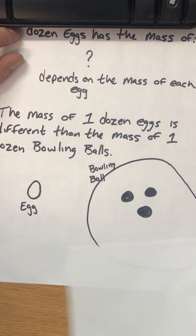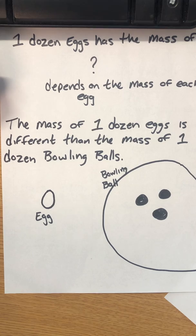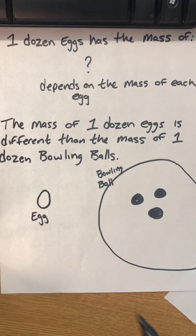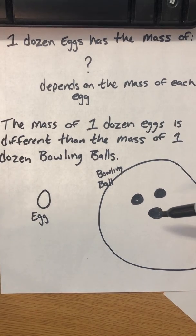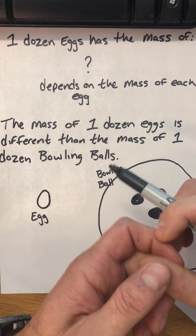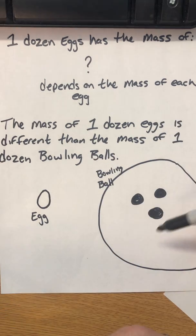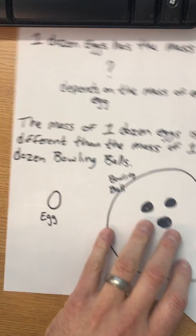The mass of a dozen eggs is going to be pretty different than the mass of one dozen bowling balls, right? And that's because the mass of an egg is really different than the mass of a bowling ball. So you can expect the mass of 12 eggs to be quite a bit less than the mass of 12 very heavy bowling balls, right? And that's the way it works in chemistry too.